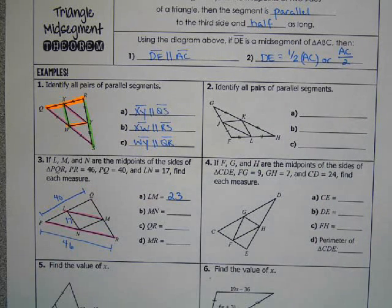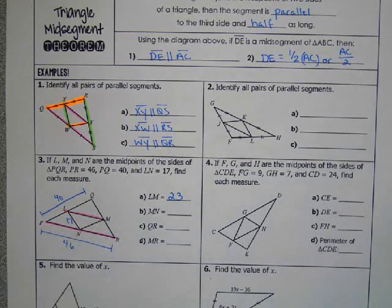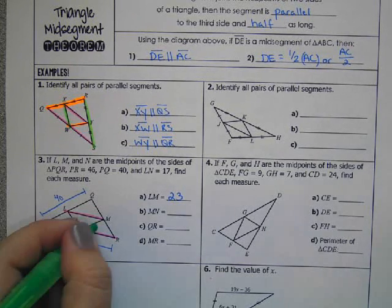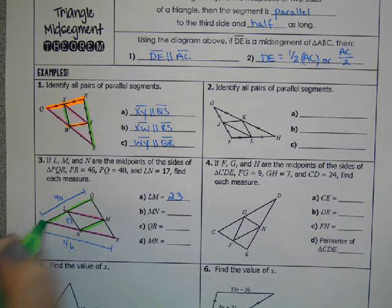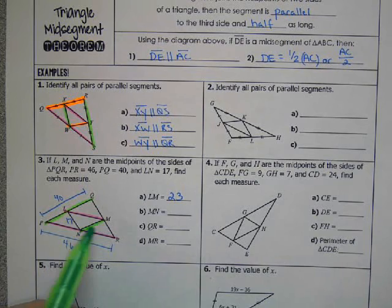And then we're looking at MN. Well, MN is parallel to QP. So MN is the midsegment, it's half of the side it's parallel to. Half of 40 is 20.